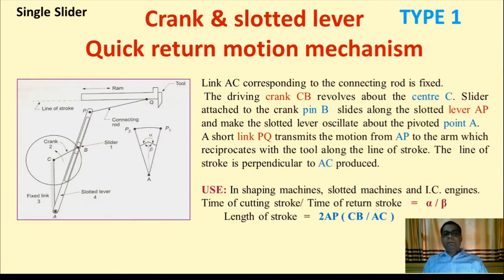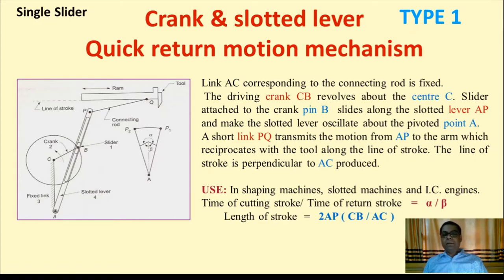The line of stroke is perpendicular to AC. The application of this mechanism is in shaping machines, slotting machines, and IC engines. In cutting machines like the shaping machine, the ratio of time of cutting stroke to time of return stroke equals angle alpha divided by beta. The length of stroke equals 2 × AP × (CB / AC), where CB is the crank length and AC is the fixed link length.